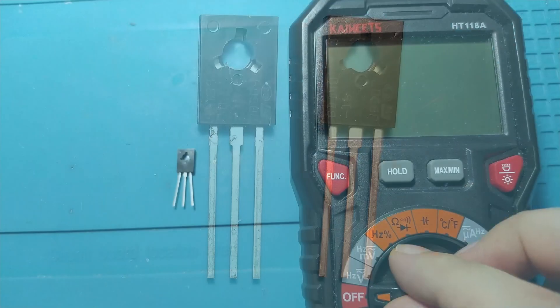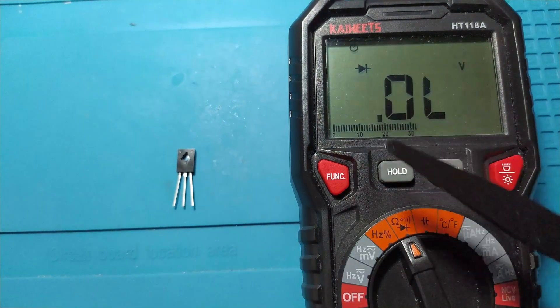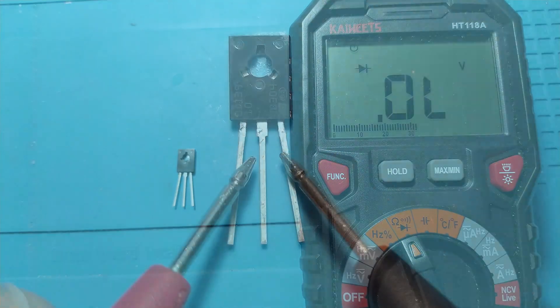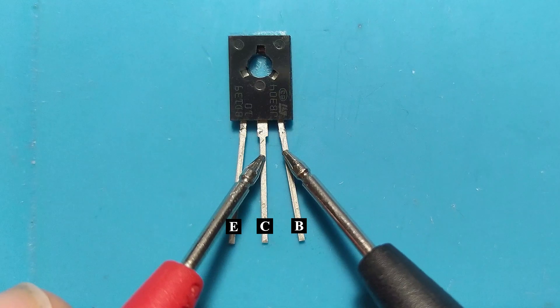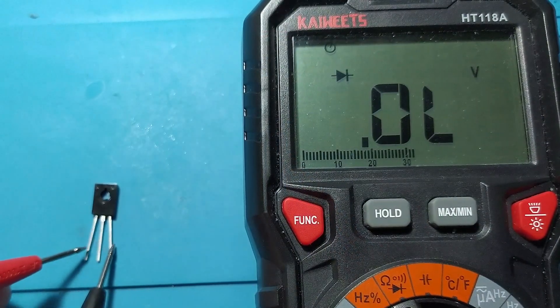To test the front transistors, we select the multimeter on the diode measurement area. With the black probe on the base and the red probe on the emitter or collector, we should not have any voltage drop.